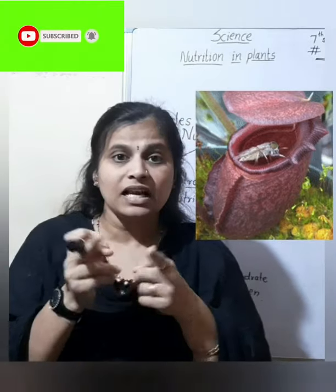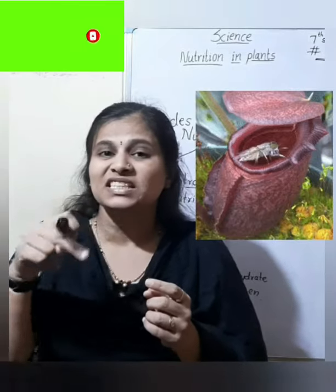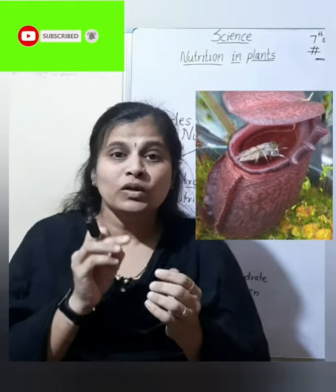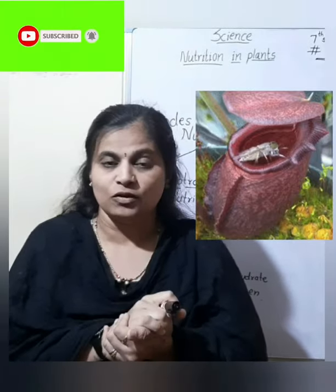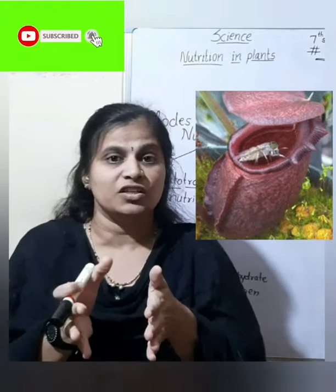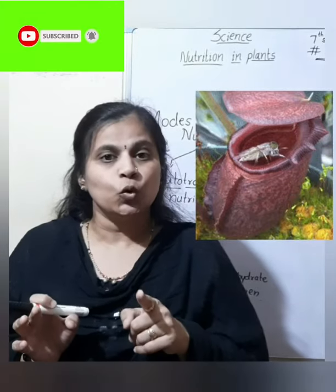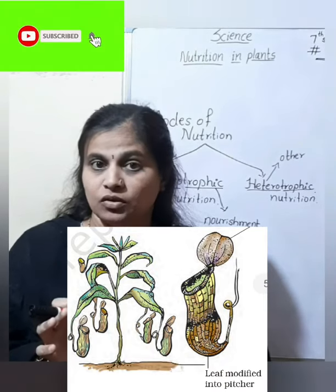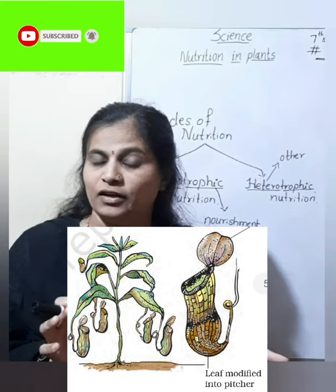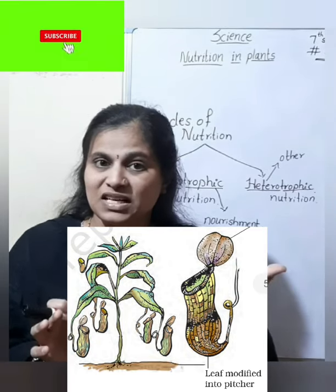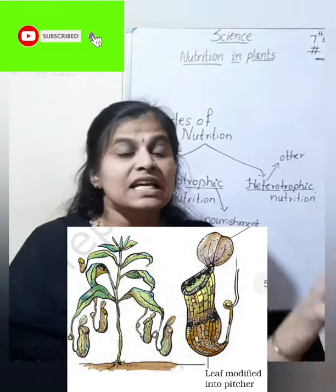Inside the pitcher, there are hair-like projections that entangle the insect and kill it using juice secreted inside. Nutrients from the insect are then absorbed by the pitcher plant. This is how the plant fulfills its nutrition. This plant is called an insectivorous plant. It also carries out photosynthesis, but it grows in swamp areas where there is a lack of nitrogen. To fulfill that lack of nitrogen, it traps insects.